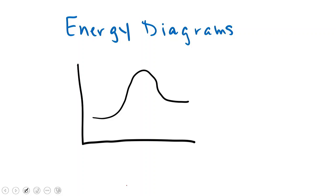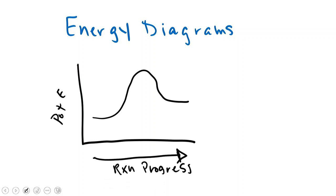In this video, we're going to discuss how we use energy diagrams to help us determine whether we have endothermic or exothermic reactions. Here we have an energy diagram, and we're going to label the parts of this diagram. Potential energy is on the y-axis, and on the x-axis is the reaction progress. As the reaction goes forward, what is the energy that is either consumed or produced? The potential energy of our reactants is on the left-hand side of the graph, and the potential energy of our products is on the right-hand side.